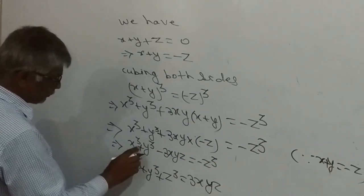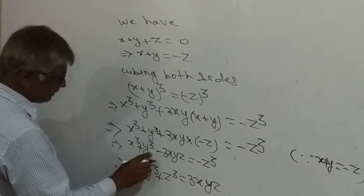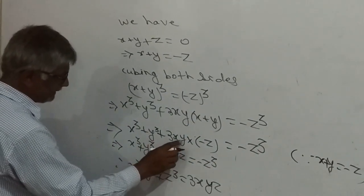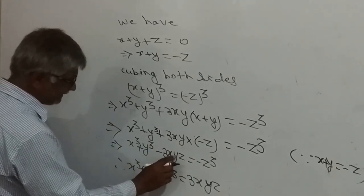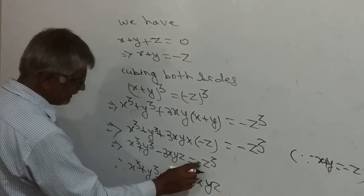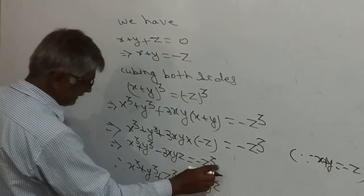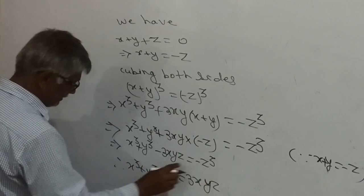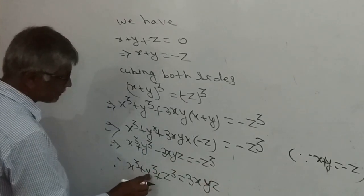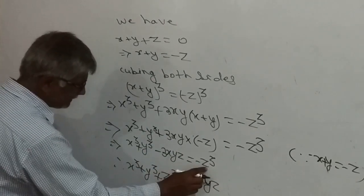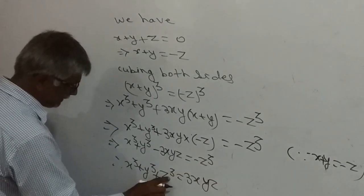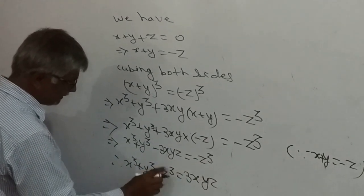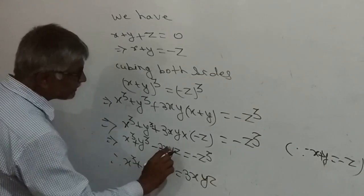So x³ + y³ − 3xyz = −z³. Bringing z³ to the left side: x³ + y³ + z³ = 3xyz. This is what we needed to prove.